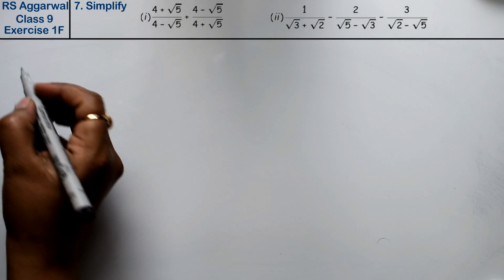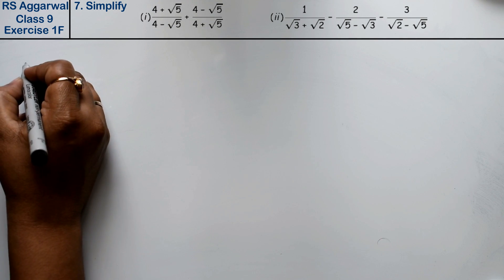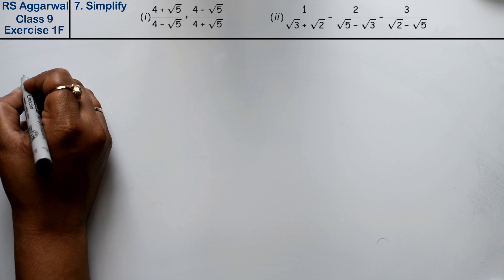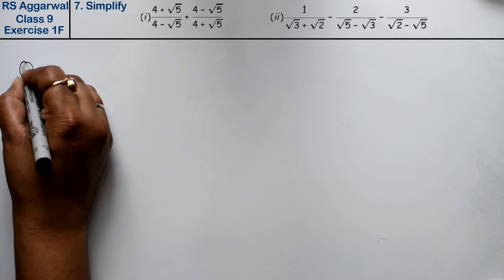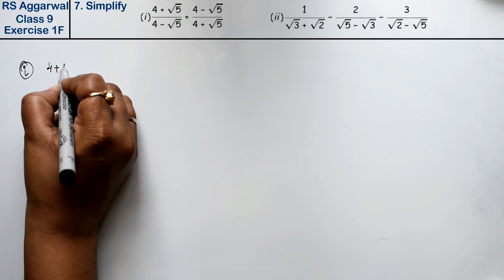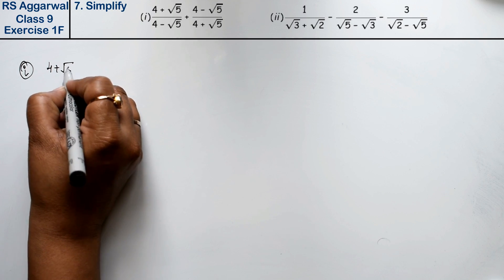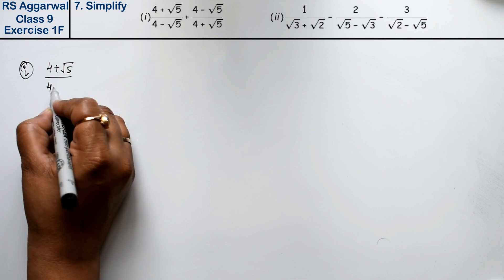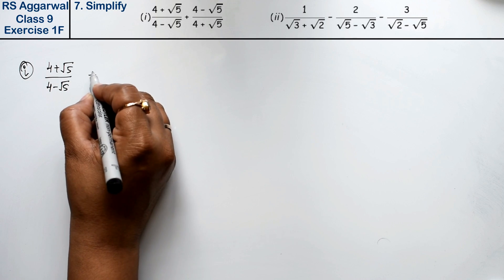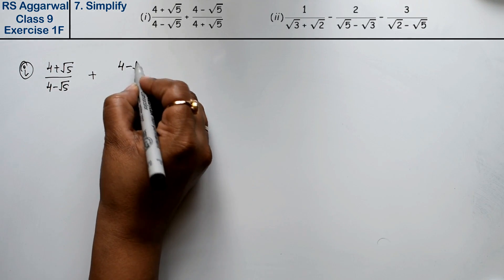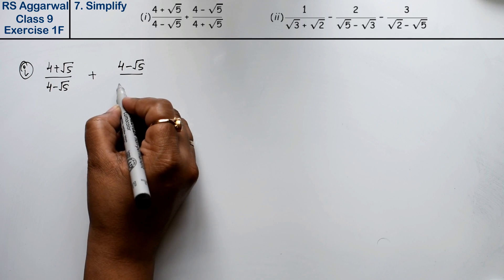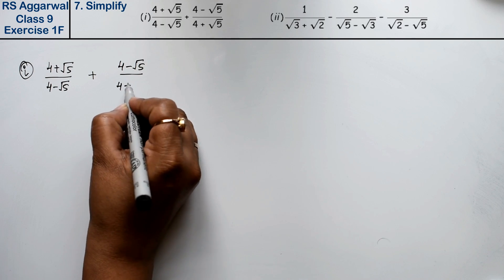Let's do question number 7 of exercise 1f — number system, question number 7: simplify. The first part is: (4 + √5)/(4 - √5) + (4 - √5)/(4 + √5).